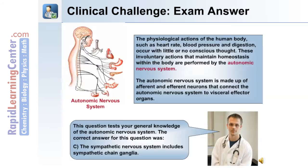Here's the answer to the question. This question tests your knowledge of the different divisions of the autonomic nervous system. The correct answer was C: the sympathetic nervous system includes sympathetic chain ganglia.